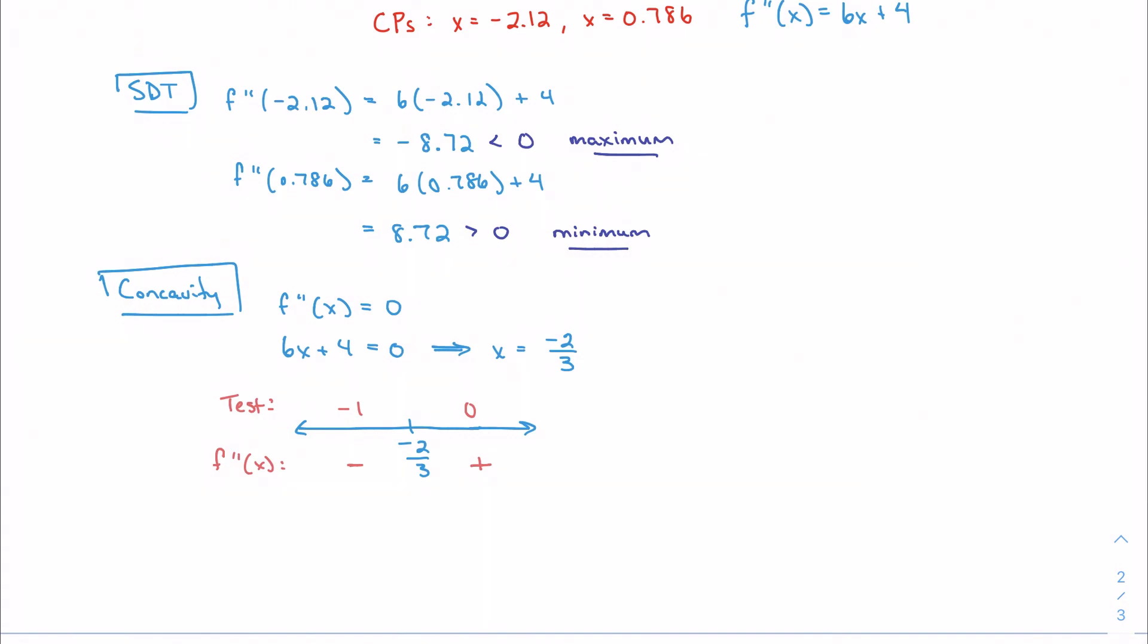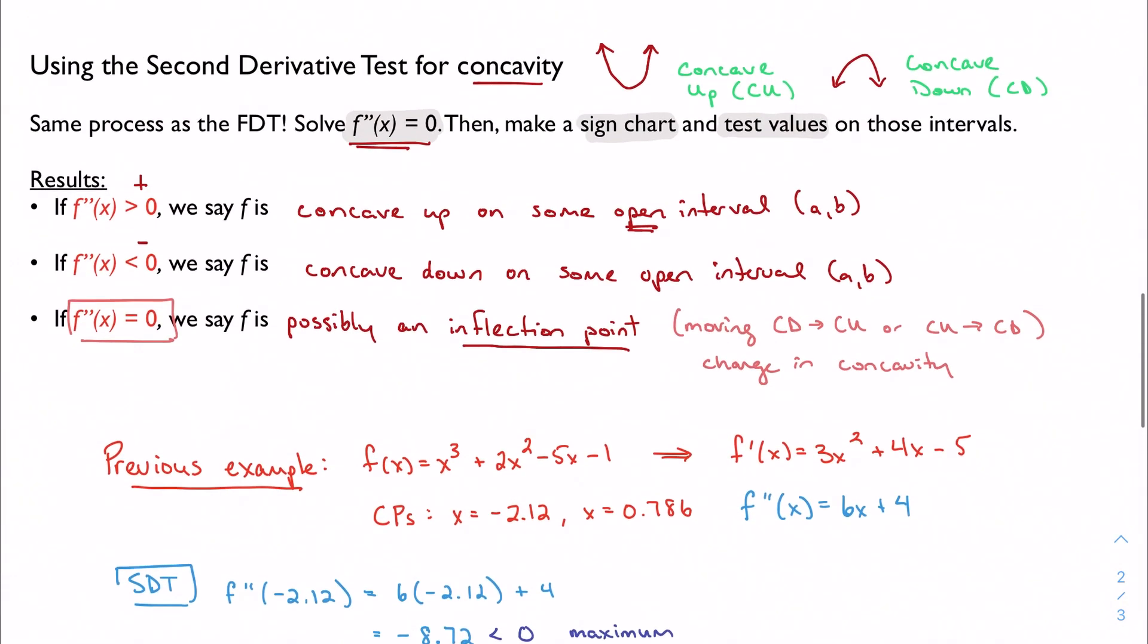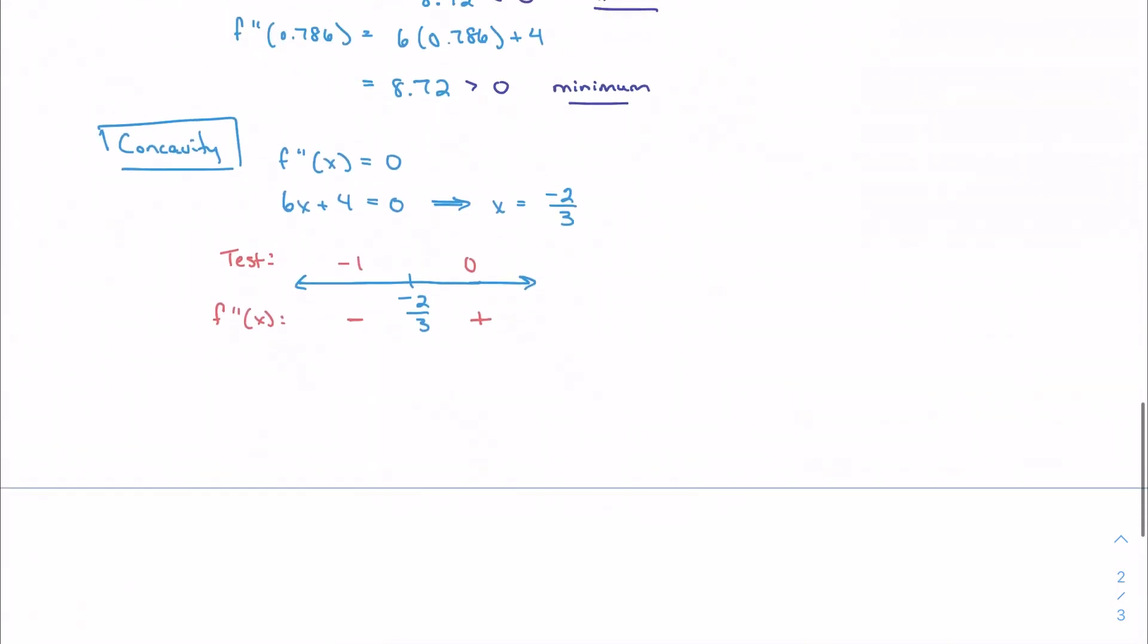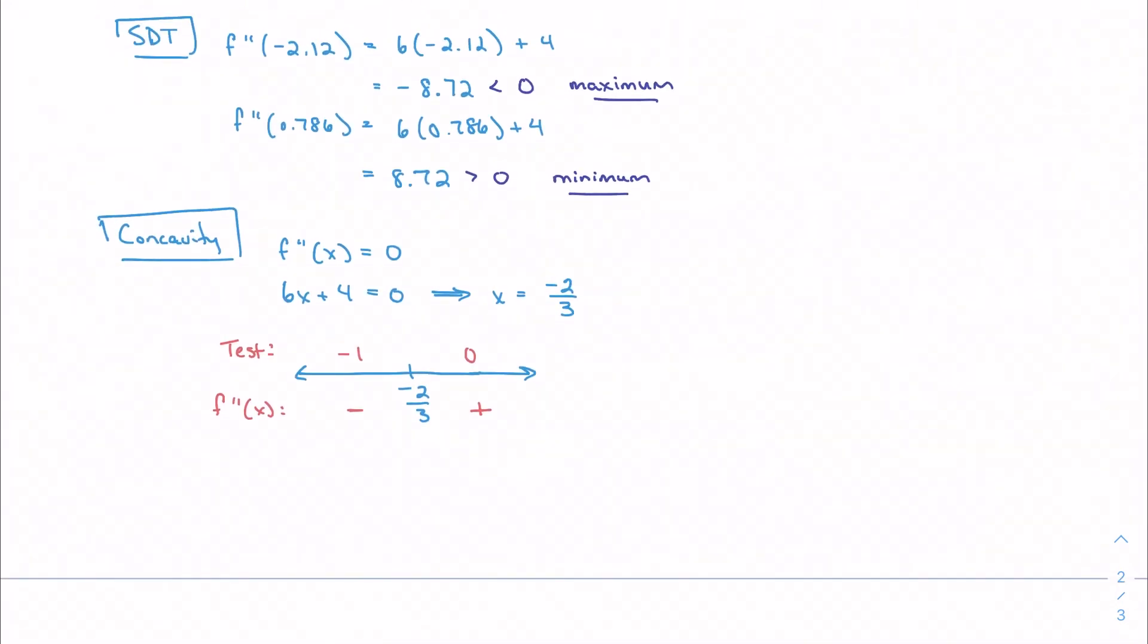Again, we can kind of pull these intervals from our sign chart to tell us about the concavity. I'm looking for positive, concave up, negative, concave down. Positive up, negative down. So we can say that f is concave up on the interval negative 2 thirds to infinity. And we can say that f is concave down on negative infinity to negative 2 thirds.